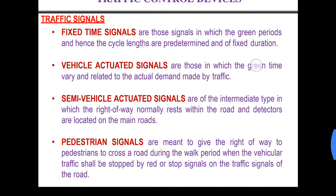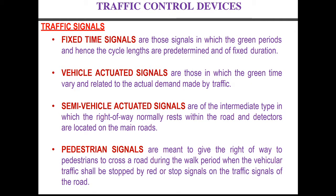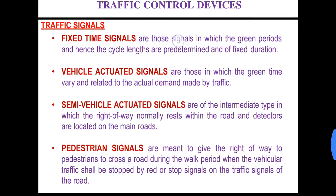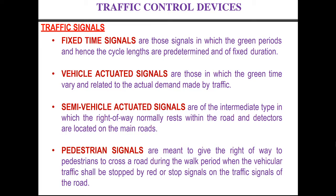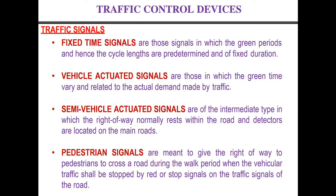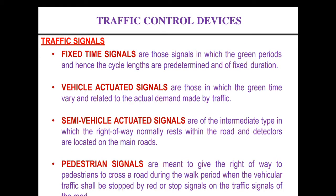So here in fixed time signals, the timing of the green period or the red period is fixed, so the total cycle length of the traffic signal is fixed. In vehicle actuated signals, these are those in which the green time varies and is related to the actual demand made by traffic. Here what we do is we provide sensors at the roads. With the help of these sensors, the green time, the red time, and the amber time can be changed.